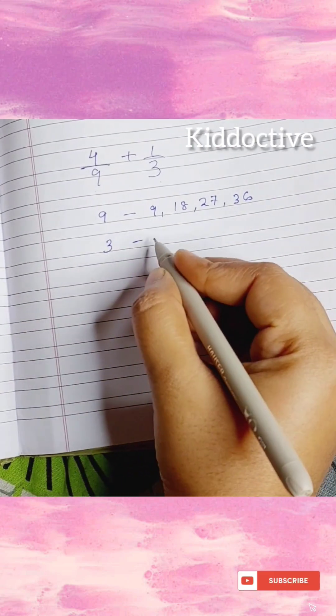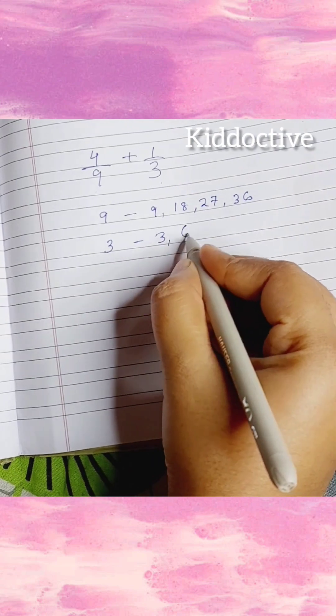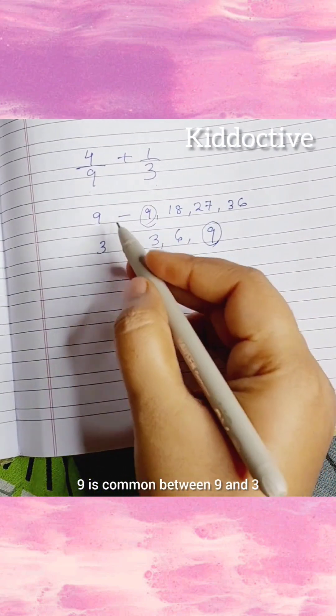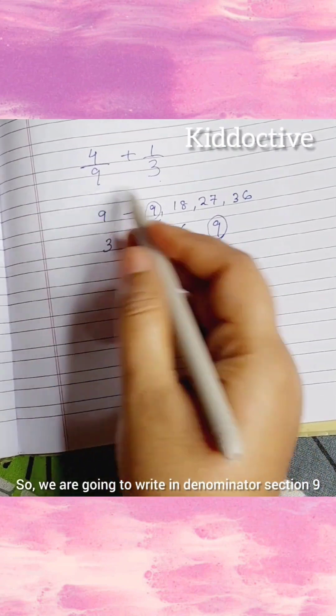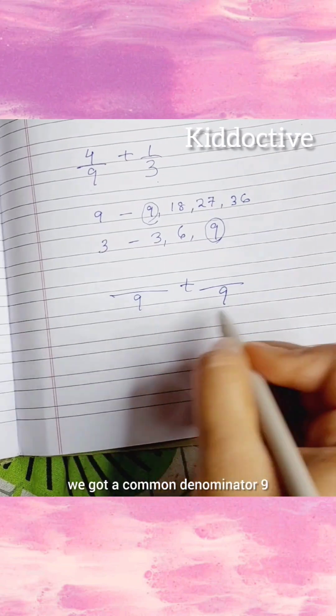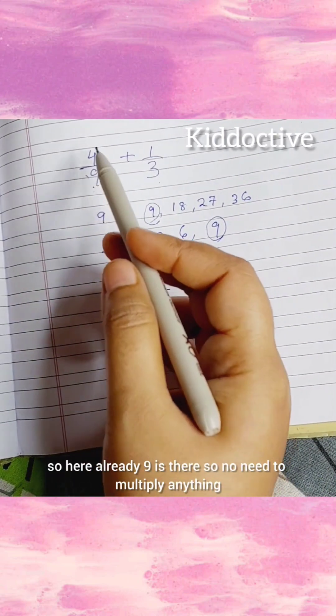Now we will check for 3. So 3, 6, and 9. 9 is common between 9 and 3, so we are going to write in denominator section 9. We got a common denominator of 9.